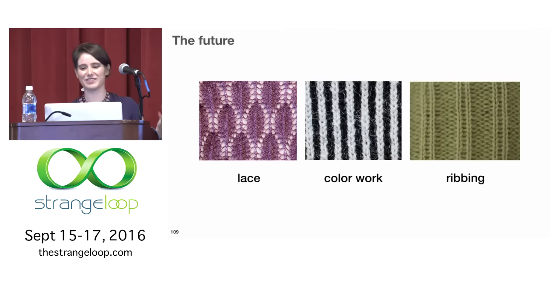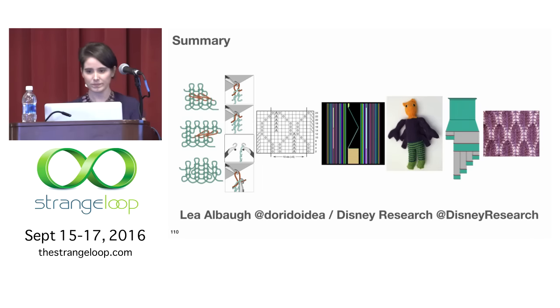So knitting machines can do a lot of other things. So there's laces, there's color work, there's ribbing, which is kind of just you have to be careful about which needles you're using. And we didn't talk about that at all. So these things are kind of easy to talk about when you're talking about rectangular swatches, but how do these things map onto cool shapes? Like what would a lace snake look like? There's aesthetics also to be considered and UI tools and things like that.